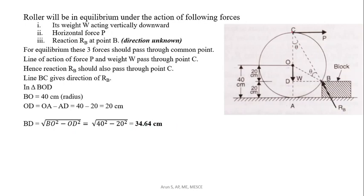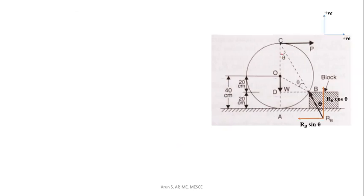Now consider triangle CBD. What is tan theta? Tan theta will be opposite side by adjacent side, that is BD by CD. What is CD? CO plus OD. CO is radius 40 cm. OD is 20 cm. So tan theta will be 0.5773. From this, theta is equal to tan inverse 0.5773, which is approximately 30 degrees. We found out that R_B with the vertical makes an angle of 30 degrees. R_B has a vertical component R_B cos theta and a horizontal component R_B sin theta.